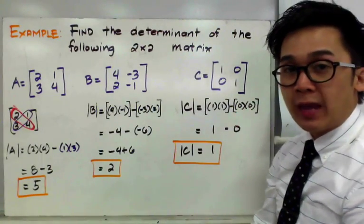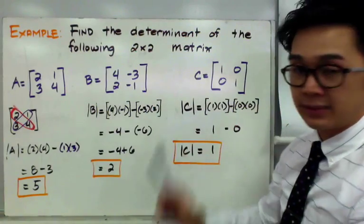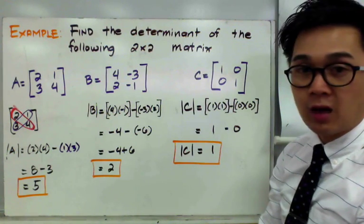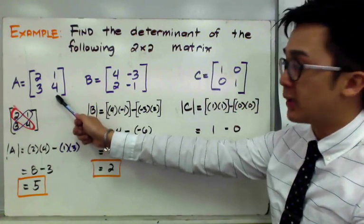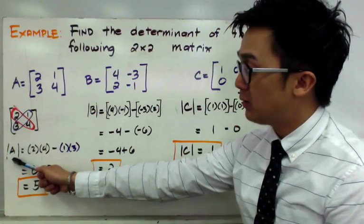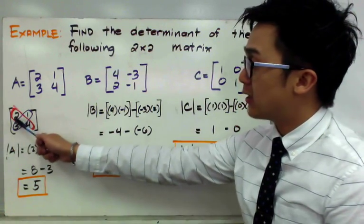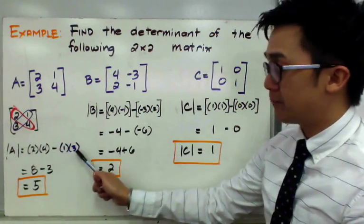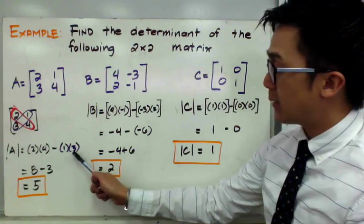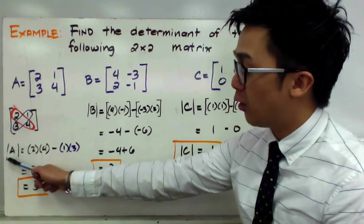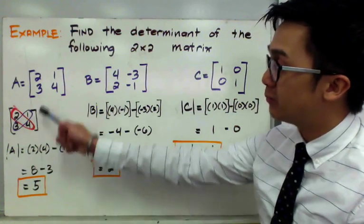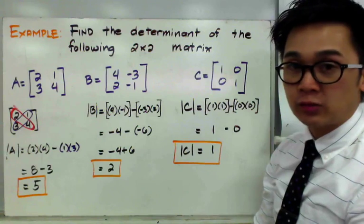Let's have some examples. In our first set of examples, we have three matrices: matrix A, B, and C. All of these are 2x2 matrices. Using the formula from the previous board, finding the determinant of matrix A is pretty simple. The determinant of A is the product of the first diagonal, which is 2 times 4, minus the second diagonal, which is 1 times 3. So 2 times 4 is 8 and 1 times 3 is 3. Therefore, the determinant of A is equal to 5 — this single value is the determinant, which we will use in future matrix operations.